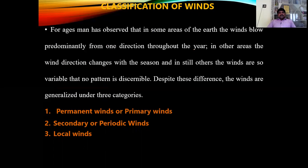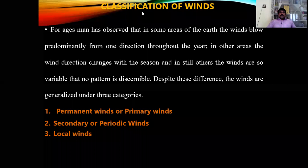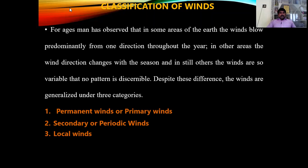Now let us move to the classification of winds. For ages, man has observed that in some areas of the earth the winds blow predominantly from one direction throughout the year. In other areas the wind direction changes with the season, and in still others the winds are so variable that no pattern is discernible. Despite these differences, the winds are generalized under three categories: permanent winds or primary winds, secondary winds or periodic winds, and tertiary winds or local winds.